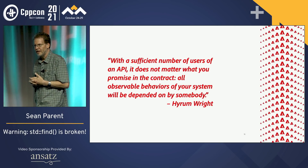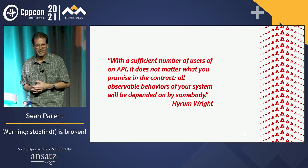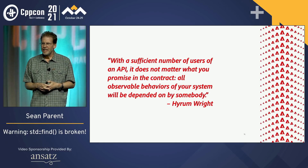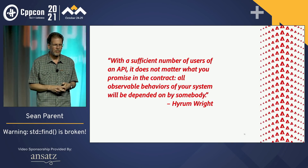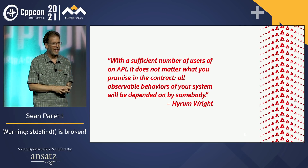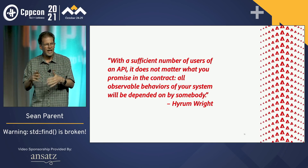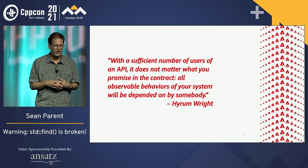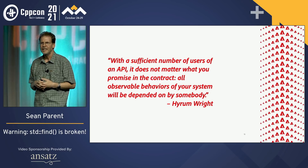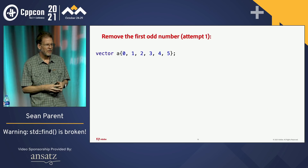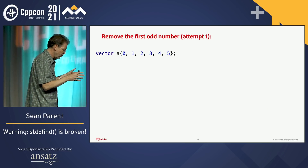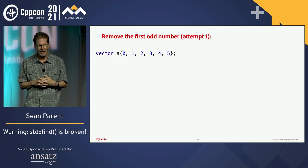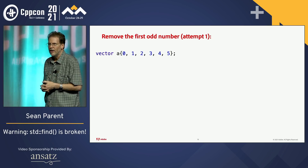But there is a problem with this. This is the villain of our story — Hiram Wright. He made this observation: with a sufficient number of users of an API, it does not matter what you promise in the contract — specifically Bertrand Meyer's design-by-contract idea of contracts. It doesn't matter what you state in that contract. All observable behaviors of your system will be depended upon by somebody. That previous quote is known as Hiram's Law, and it was Titus Winters who coined the term Hiram's Law.